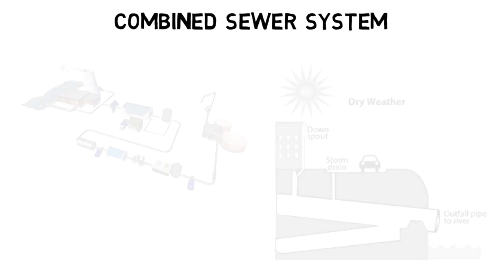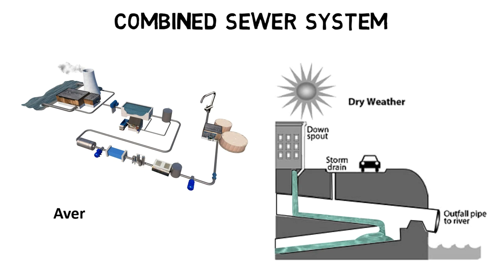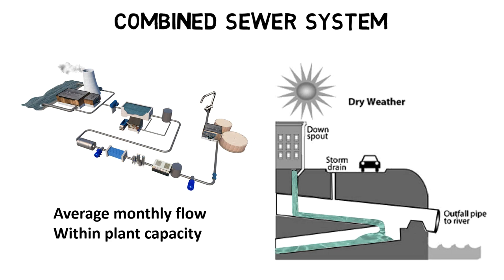If the wastewater treatment plant is connected to an older sewer system, stormwater is in the same pipe as domestic, commercial, and industrial wastewater. As long as the combined water stays underneath the maximum monthly flow, the wastewater treatment plant has sufficient capacity to treat all incoming water.